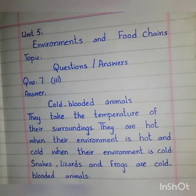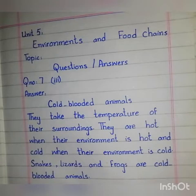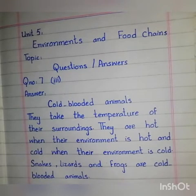Cold blooded animals are those animals that maintain their body temperature according to the changes in the environment. They take the temperature of their surroundings and change their body temperature when the environment temperature changes. They are hot when their environment is hot and cold when their environment is cold. In a hot environment, cold blooded animals can have blood that is much warmer than warm blooded animals.